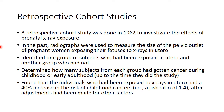A classic example of a retrospective cohort study from the 1960s examined the effect of prenatal x-ray exposure. Radiographs were formerly used to measure pelvic outlet size in pregnant women, exposing fetuses to x-rays in utero. Researchers identified one group exposed in utero and another who had not been, then looked forward to determine how many from each group developed cancer during childhood or early adulthood. They found that individuals exposed to x-rays in utero had a 40% increase in risk of childhood cancers, yielding a risk ratio of 1.4 after accounting for confounders.